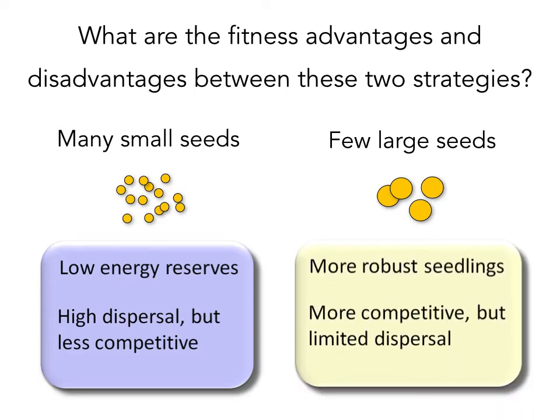On the other hand, producing fewer large seeds has both some benefits and some drawbacks as well. Fewer large seeds have higher energy reserves, but the trade-off is that because they're larger, they have limited dispersal and don't tend to disperse as far from the parent plant. But once they do reach a location, they're more robust — they have more energy reserves to draw from to build root structures and put out their first leaves. They're also more competitive. These trade-offs are going to affect the fitness of individuals producing these different types of strategies for seed production, and which is better depends upon the type of environment they occur in.